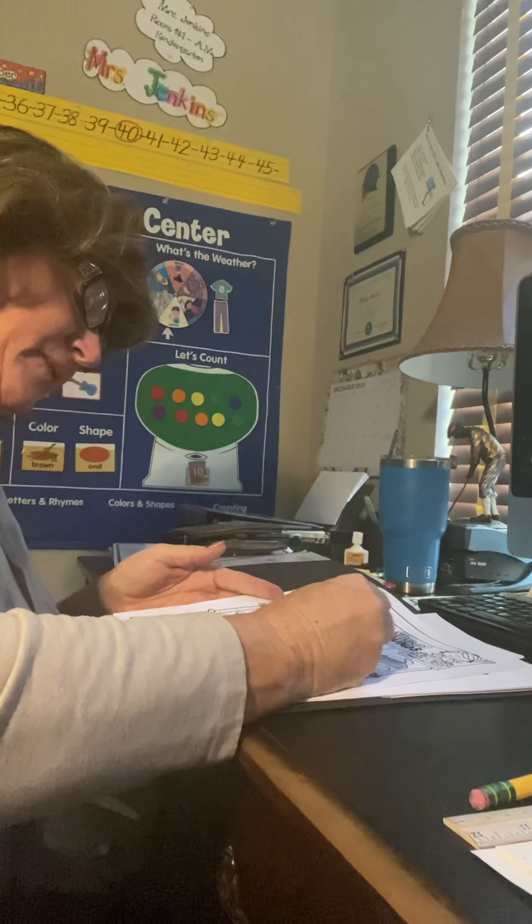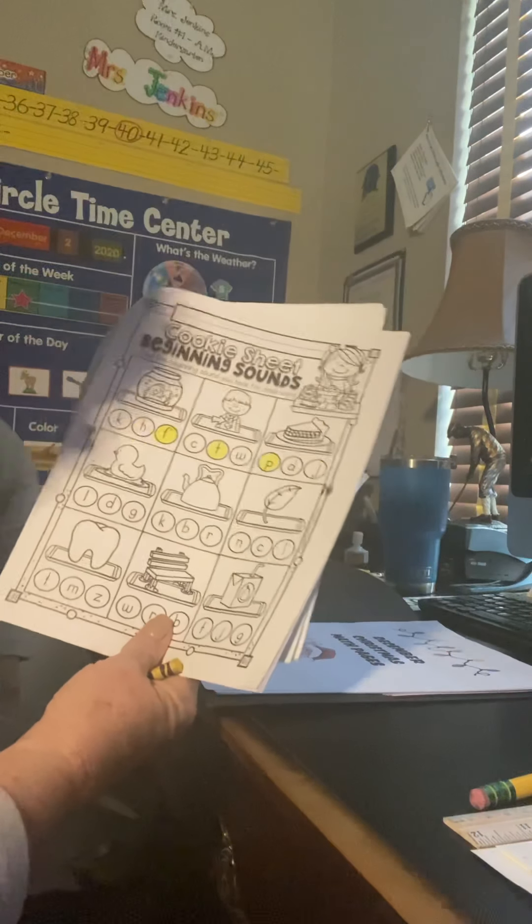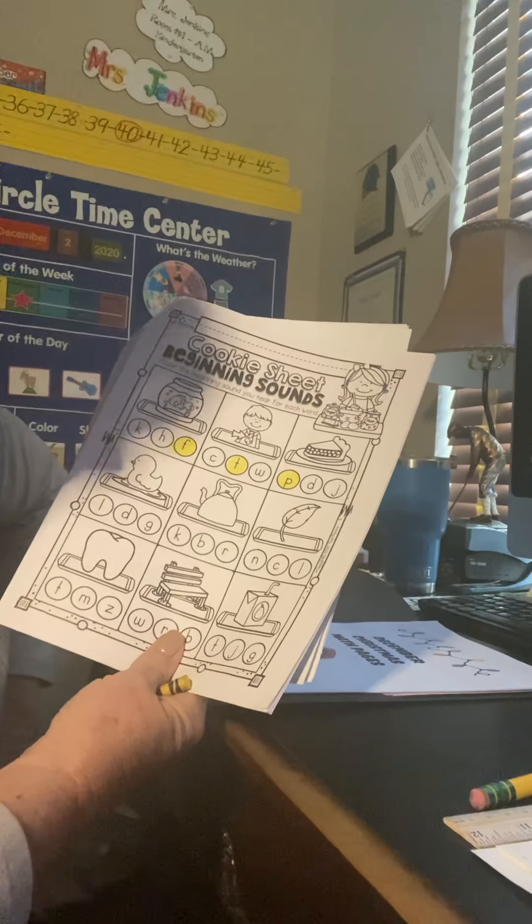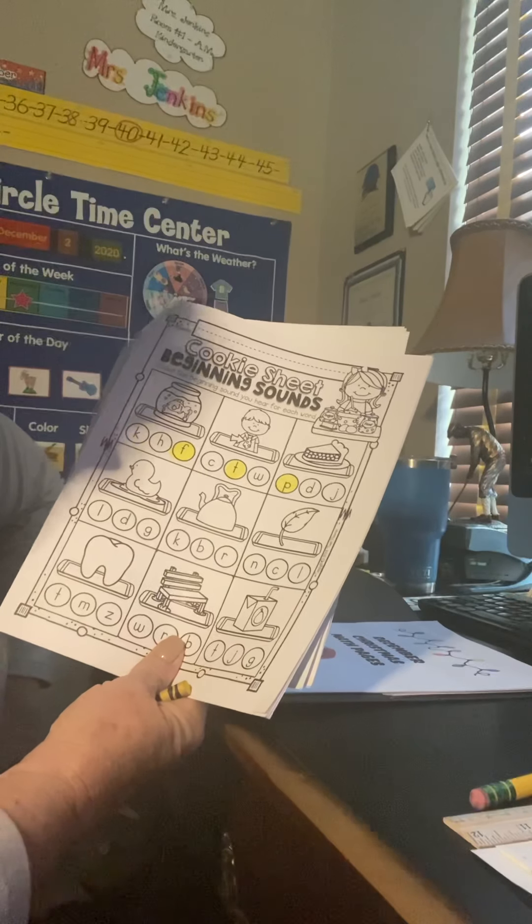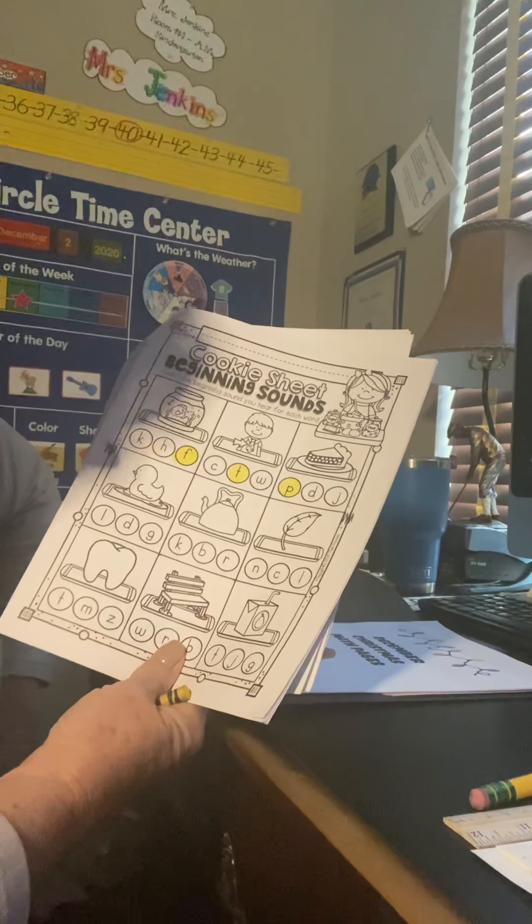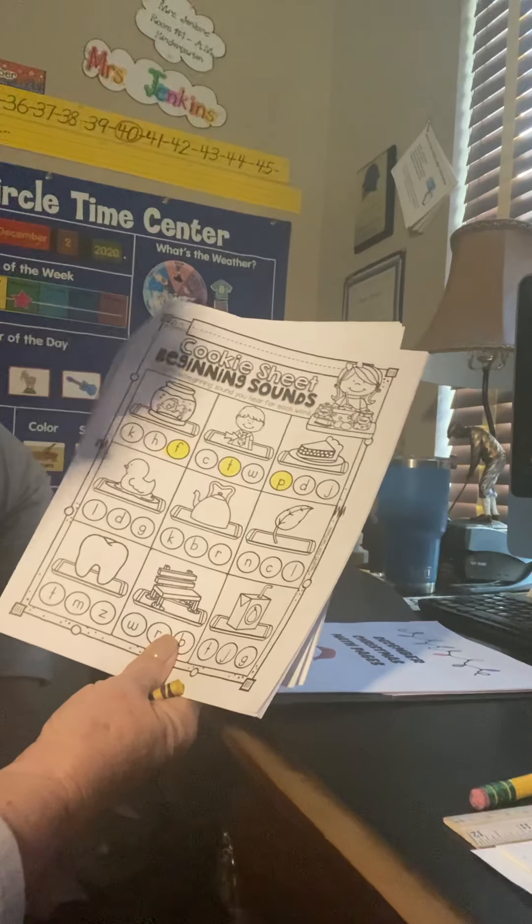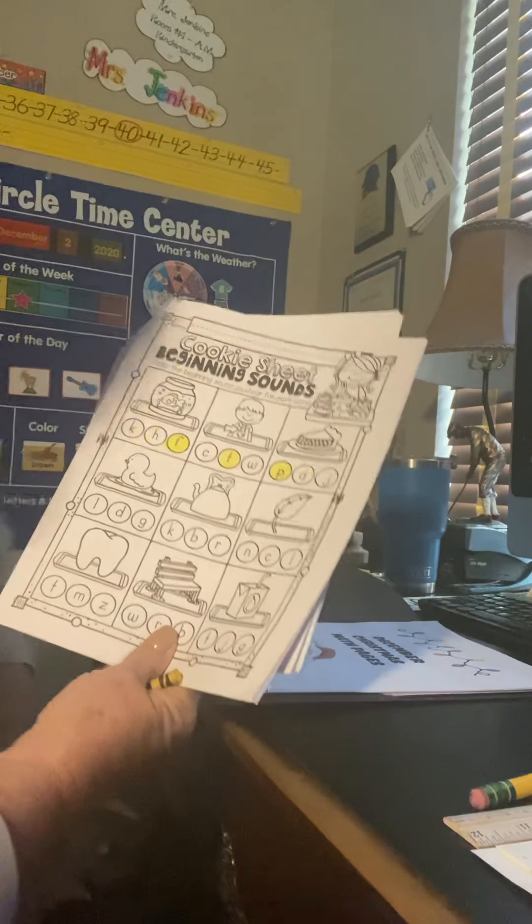Now this also is really going to help because one of the tests we give besides testing letters and sounds is we'll say a word. What sound do you hear at the beginning of fish? And the kids have to go fuh, fuh. They don't have to say F. They say fuh. What sound do you hear at the beginning of tie? And they have to say tuh. What sound do you hear at the beginning of pie? Puh, puh. They have to make the sound. So this is just the isolating beginning sound. I'm not going to do any more.